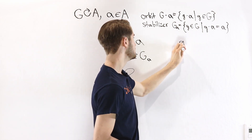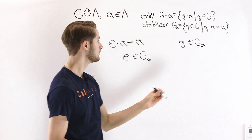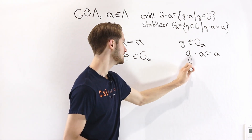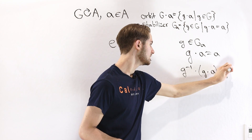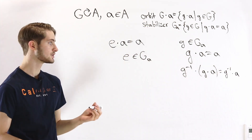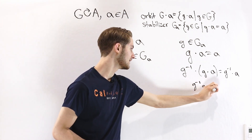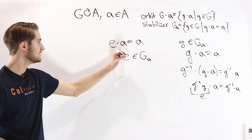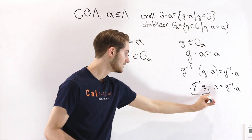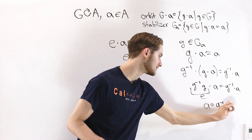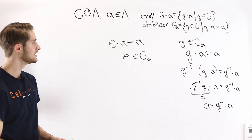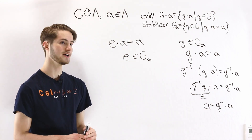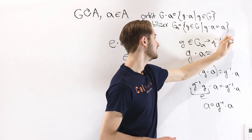Next, suppose G is in the Stabilizer of A. By definition, G times A equals A, and we can multiply by G inverse on both sides: G inverse times G times A equals G inverse times A. Because group actions are associative, we can write this as G inverse G times A equals G inverse times A, but G inverse G is just the identity. We know E times A equals A, so we get A equals G inverse times A. Therefore if G is in the Stabilizer of A, then G inverse times A equals A, meaning G inverse is also in the Stabilizer of A.